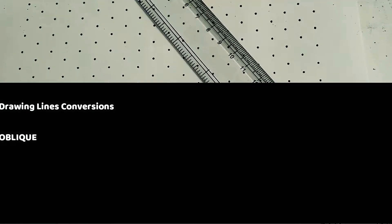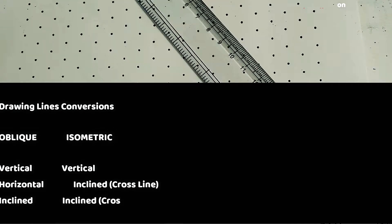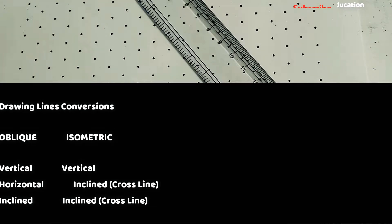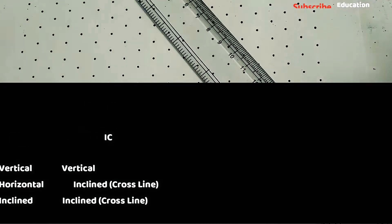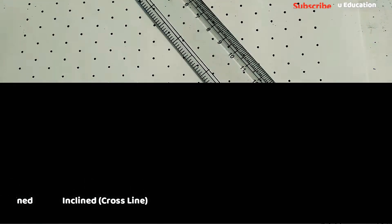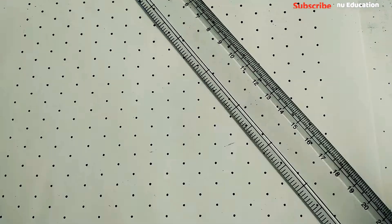Before starting exercise 3, we have to remember some conditions while drawing isometric sheet or oblique sketches. In oblique sketch, they may give horizontal lines, vertical lines, and inclination lines. When converting into isometric dot sheet, horizontal lines must be converted into cross lines or inclination lines. Vertical lines remain vertical, and inclination lines remain inclined. Horizontal lines will always be inclined in isometric sheets.